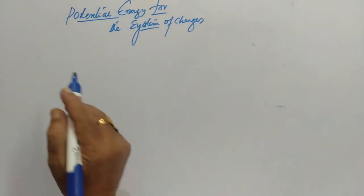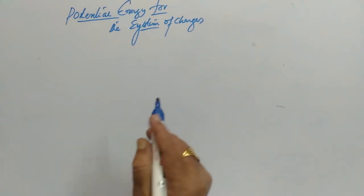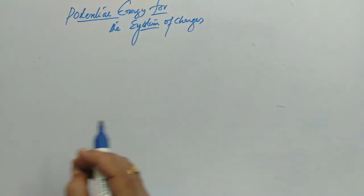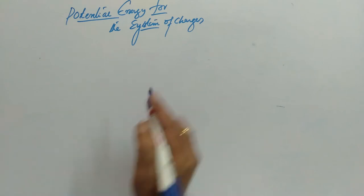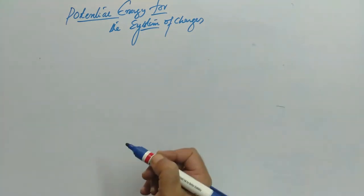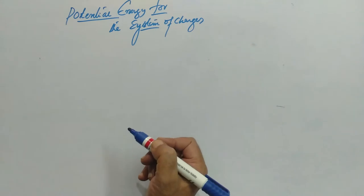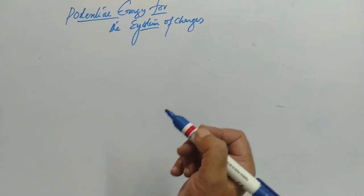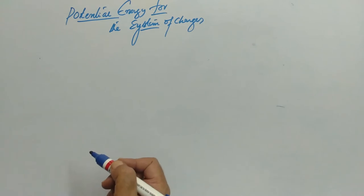We talked about the potential energy for the system of charges in the absence of external electric field. Now suppose let's consider that some electric field is already there, and we want to bring charge Q1. In the previous article, we took the work done in bringing Q1 from infinity to any point as zero because we considered no electric field was there.